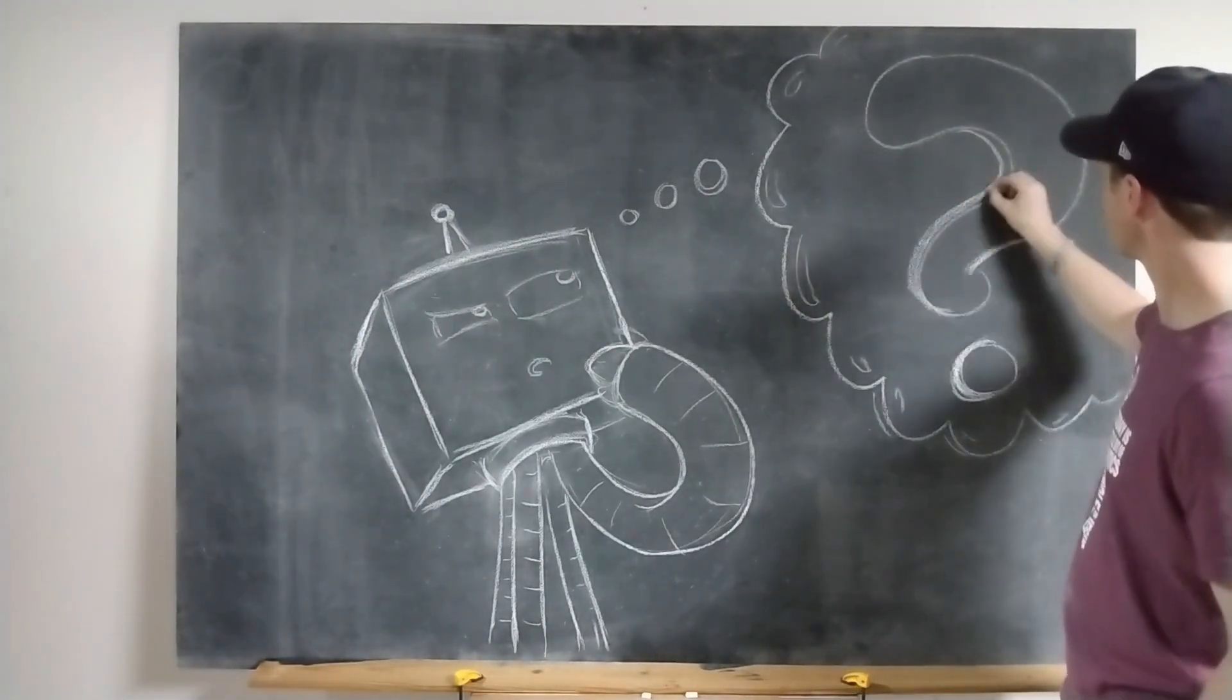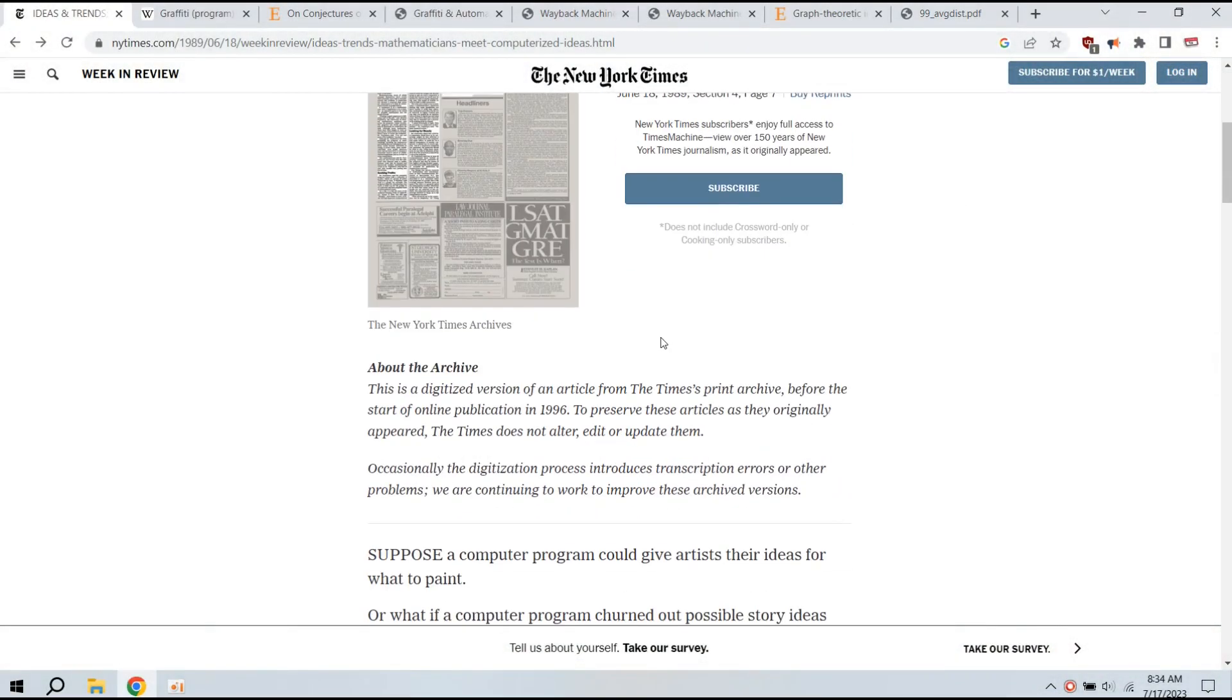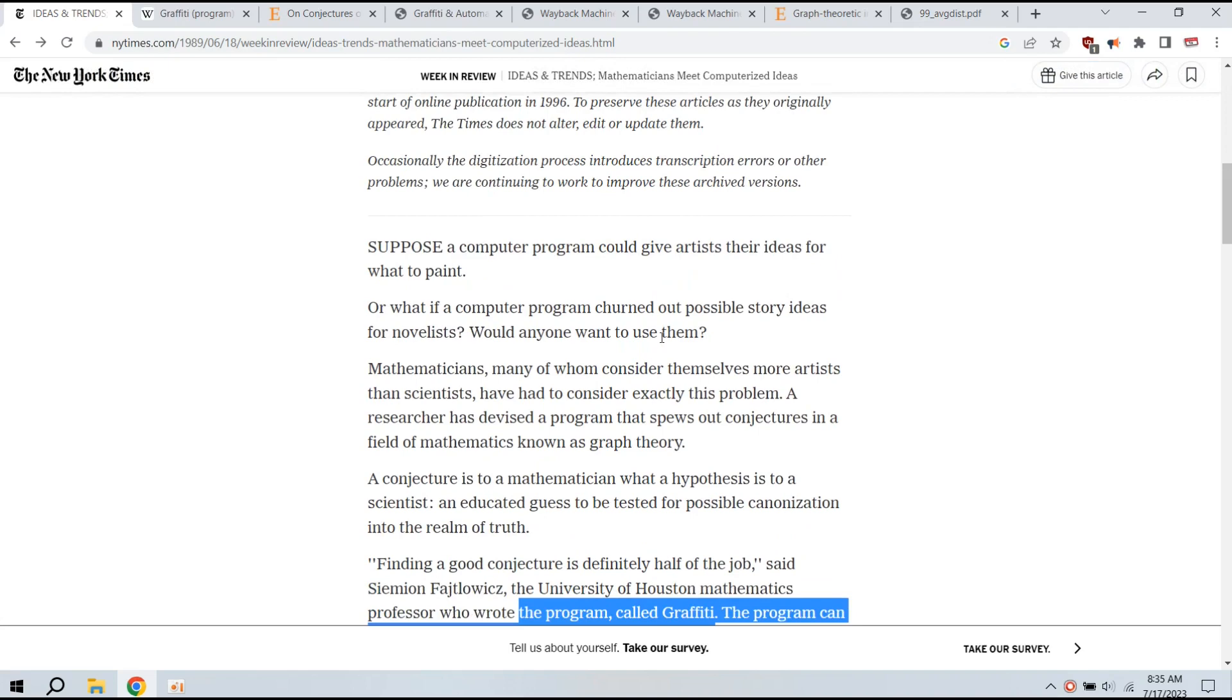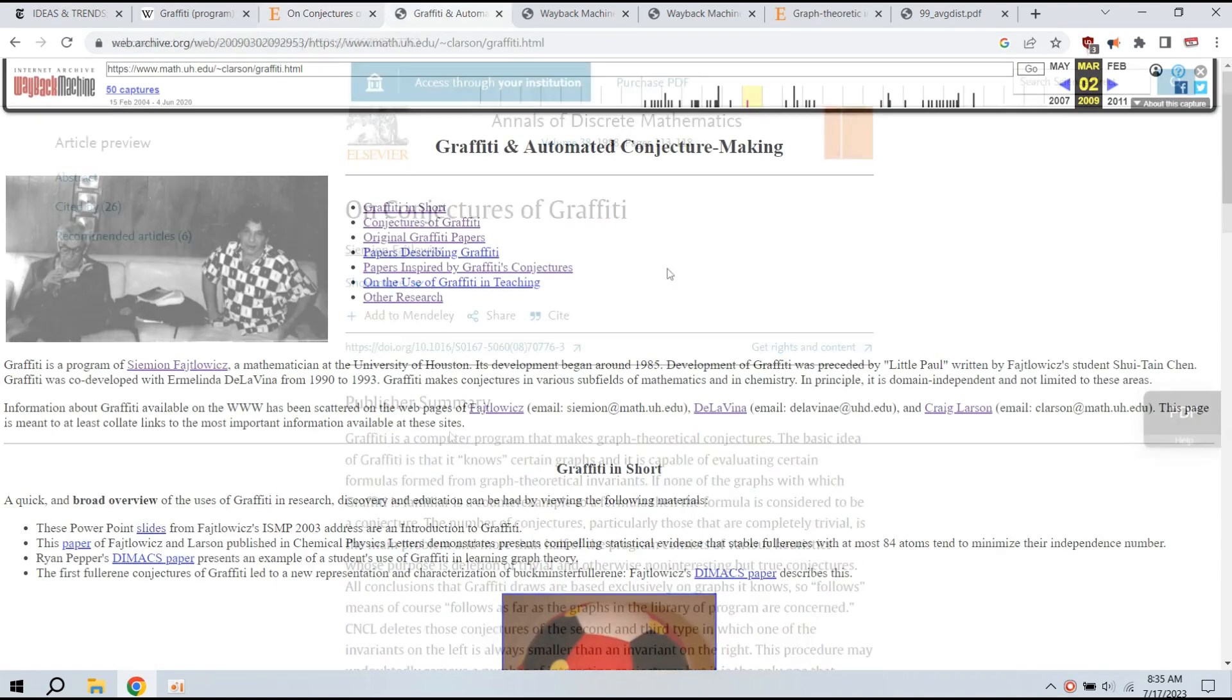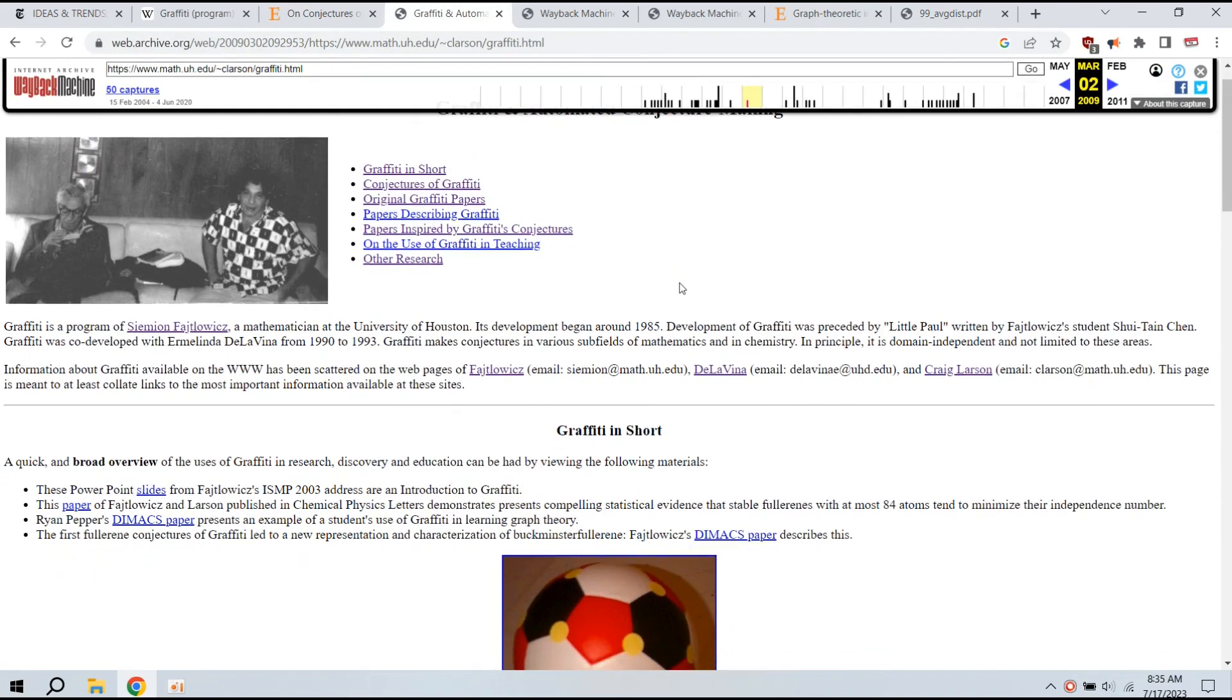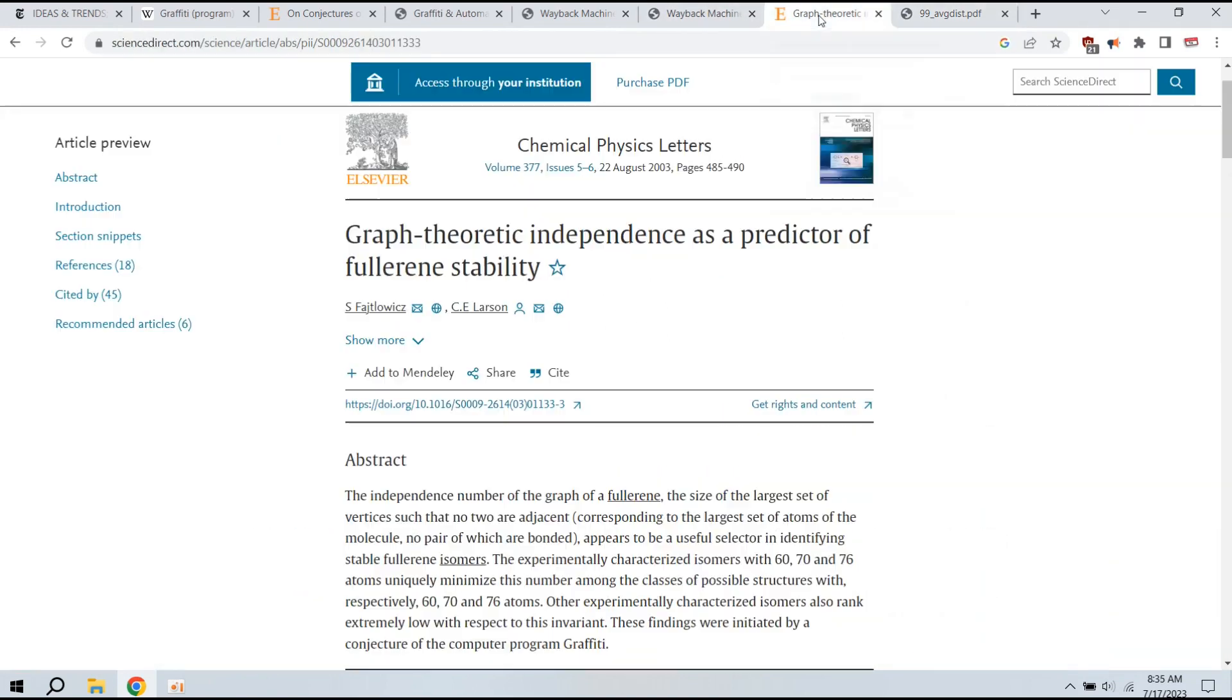Let me introduce you to Graffiti. Graffiti is a computer program which makes conjectures in the field of mathematics known as graph theory. Graffiti's development began in the mid-1980s and since then, many graffiti results have been published, including results in chemistry, surprisingly enough.